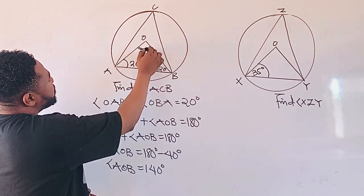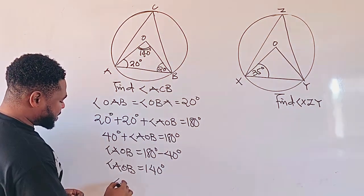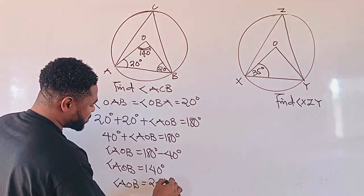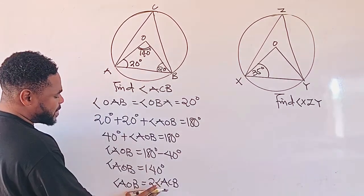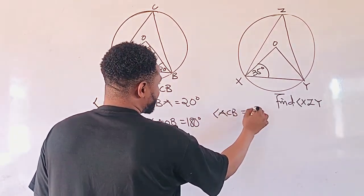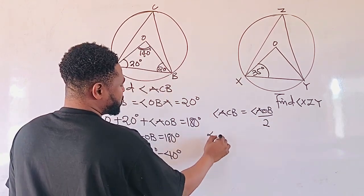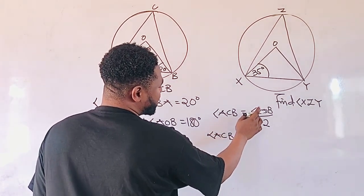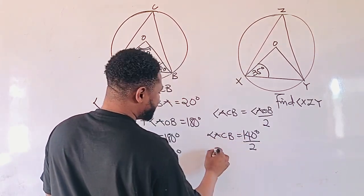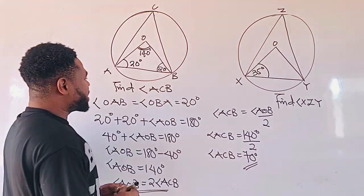Now that we know the angle at the center to be 140 degrees, there is a property in the circle theorem which states that the angle at the center of a circle — which is angle AOB — will be equal to 2 multiplied by angle ACB. Therefore, angle ACB will be equal to angle AOB divided by 2. So angle ACB equals 140 divided by 2, and angle ACB is going to be 70 degrees. So this is how we can find our angle.